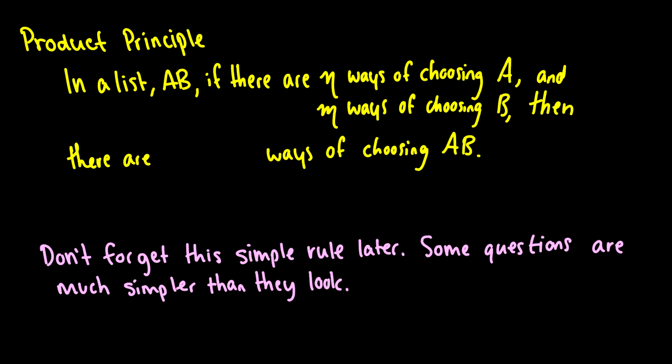Anyways, this is called the product principle or principle of multiplication. And we say in a list or a set of tasks AB, if there's n ways of choosing A and m ways of choosing B, then there are n times m ways of choosing AB. And basically, these are subsequent tasks, which means we do A, then we do B, then we do C, and this occurs in a list. And what I will want to say is that these rules of products and addition are very primitive. You're going to find very difficult questions later. Do not forget these basic principles because sometimes a very difficult looking question can just be a very simple application of the product or addition principle. So please remember these.